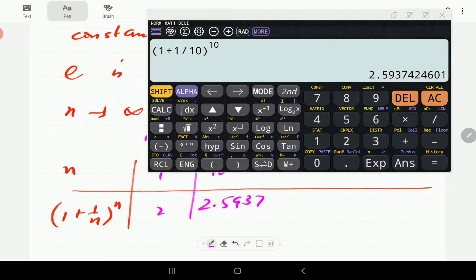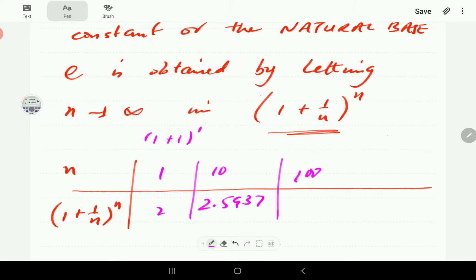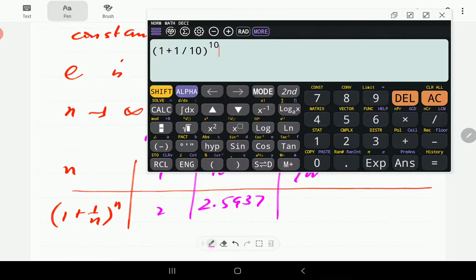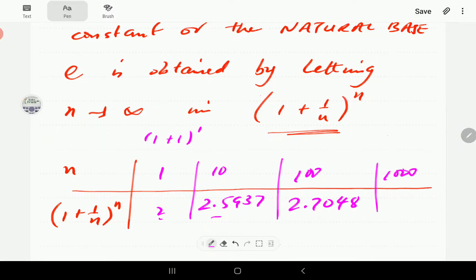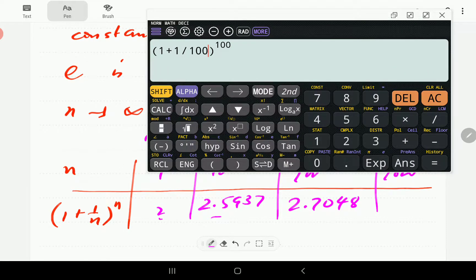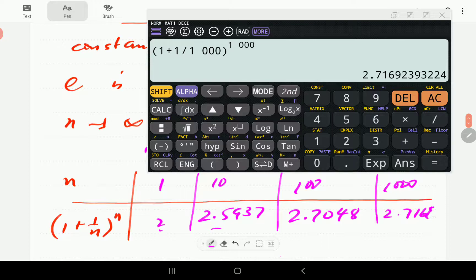Suppose n is 100. Now this is 2.7048. You can see that it's growing slightly. First 2, then 2.5, now 2.7. Suppose now that n is 1,000. This becomes 2.7169. You can see that the 7 is not changing now.